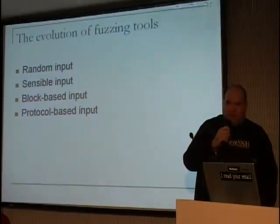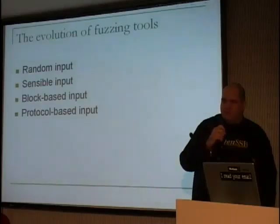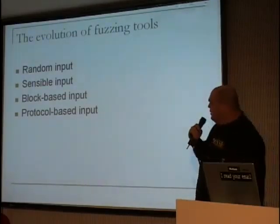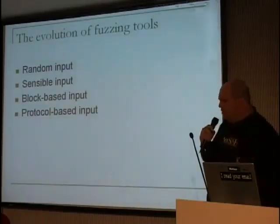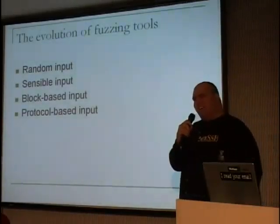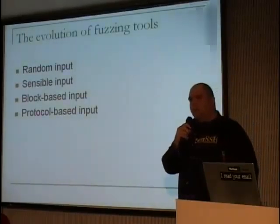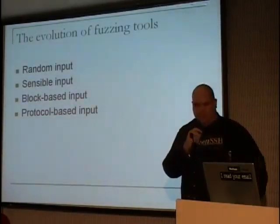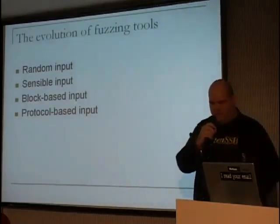Fuzzing is not just random input. In my opinion, random input cannot be just dismissed, but it can definitely be used a lot more smartly than just dumping random input into parameters like Barton Miller did back 20 years ago. The technology has advanced a little bit since then.